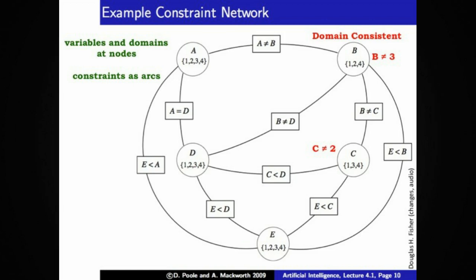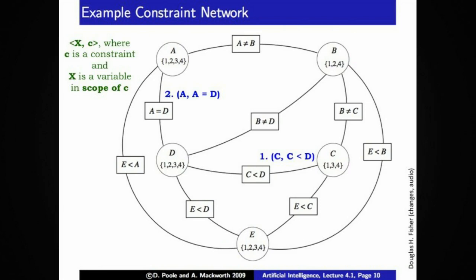In general, we can start with a constraint network like this and take into account the various binary constraints. For example, in the middle of the diagram, labeled 1, I'm asking about the implications of the constraint c is less than d on the variable c. And labeled 2, in the top left corner, I'm asking what are the implications of the constraint a equals d on the variable a? In general, I'm going to go through this constraint network constraint by constraint, variable by variable, asking for variable x: what are the implications of the domain of variable x given constraint c? Pause the video and think about what those implications are, then restart.